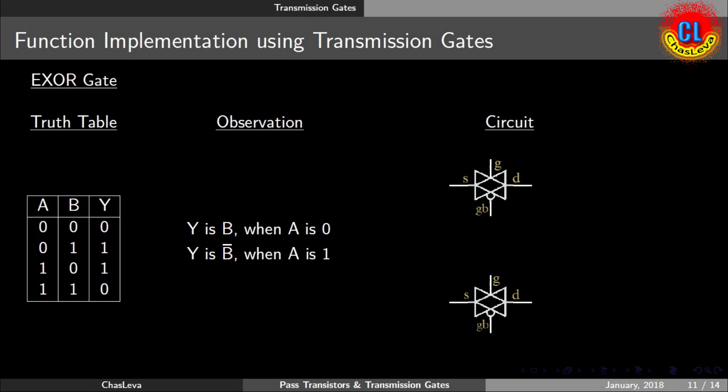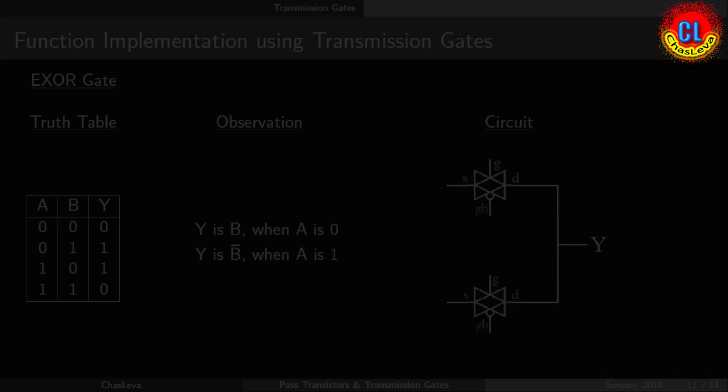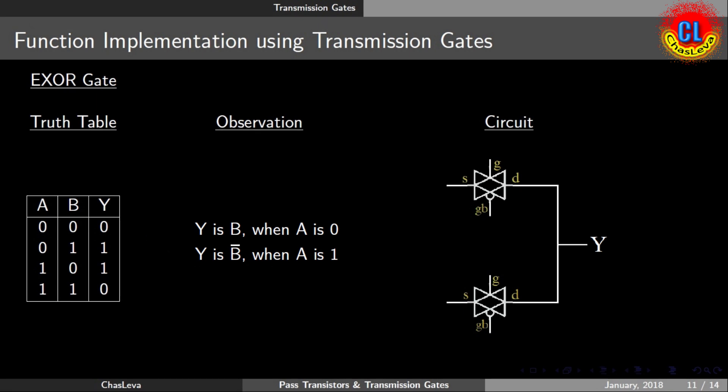First, we will draw two transmission gates like this. Then, we will connect the drain of both together and join to the output terminal Y. No need to worry while drawing the circuit, seeing two gate terminals.